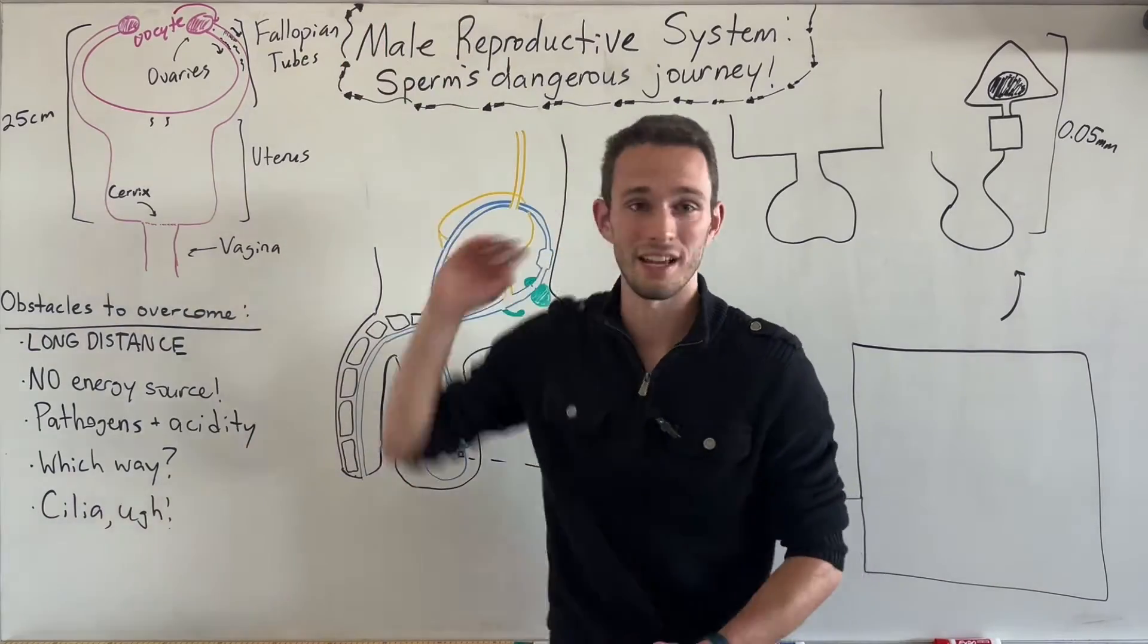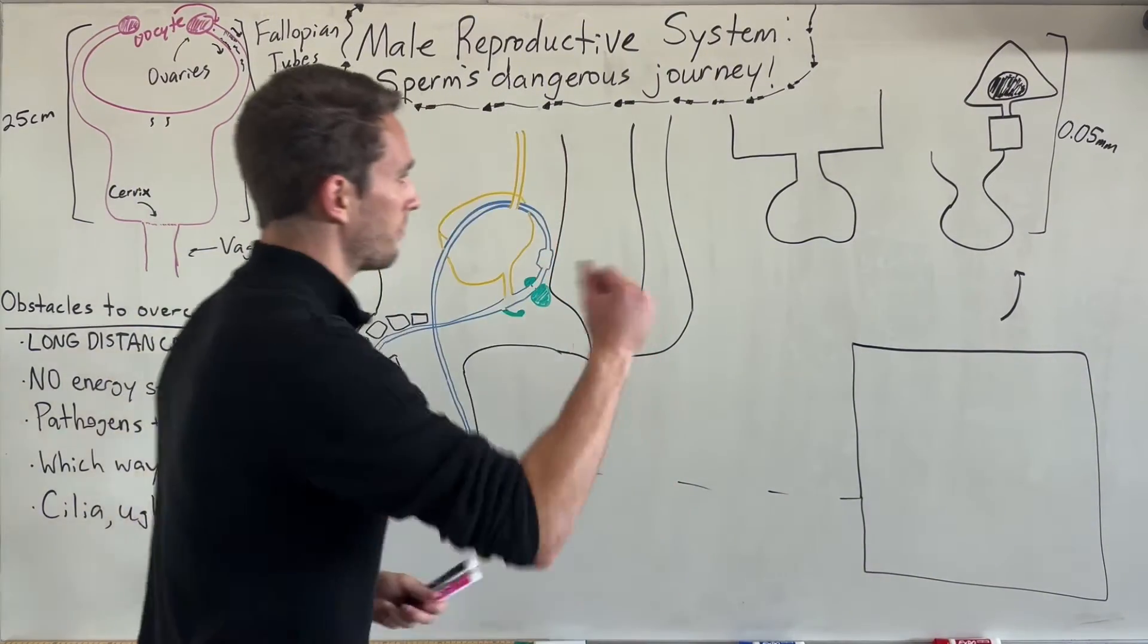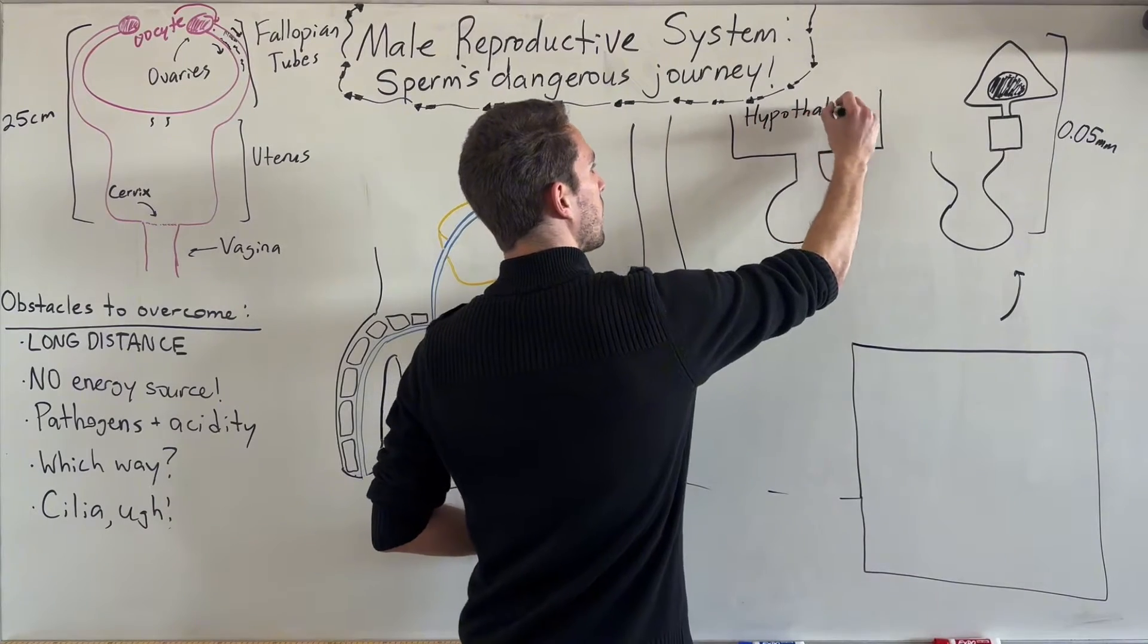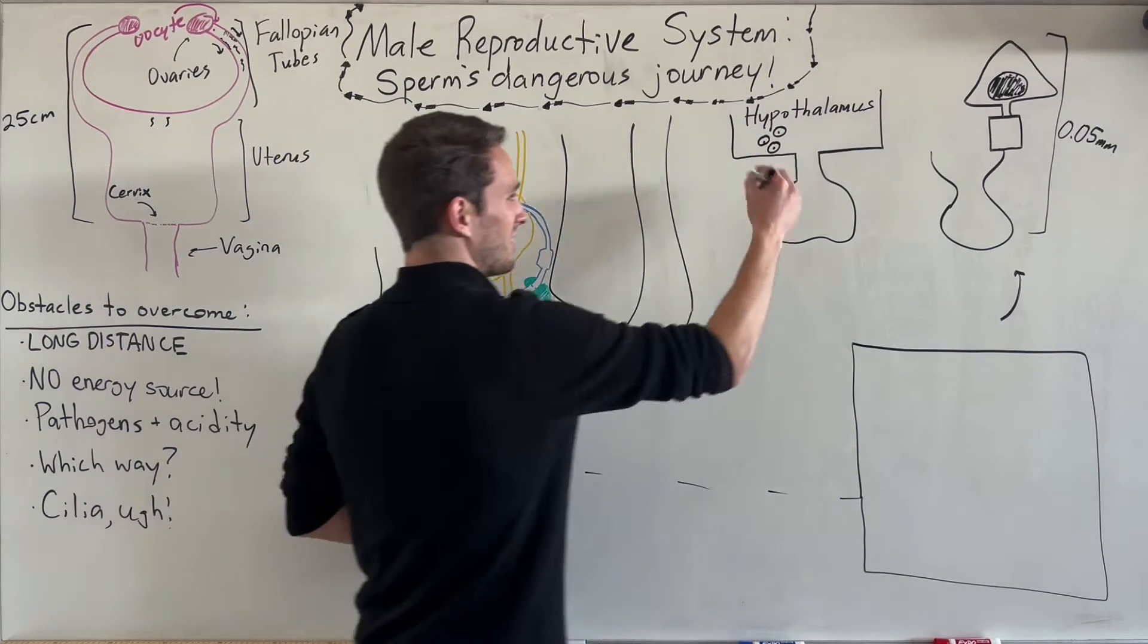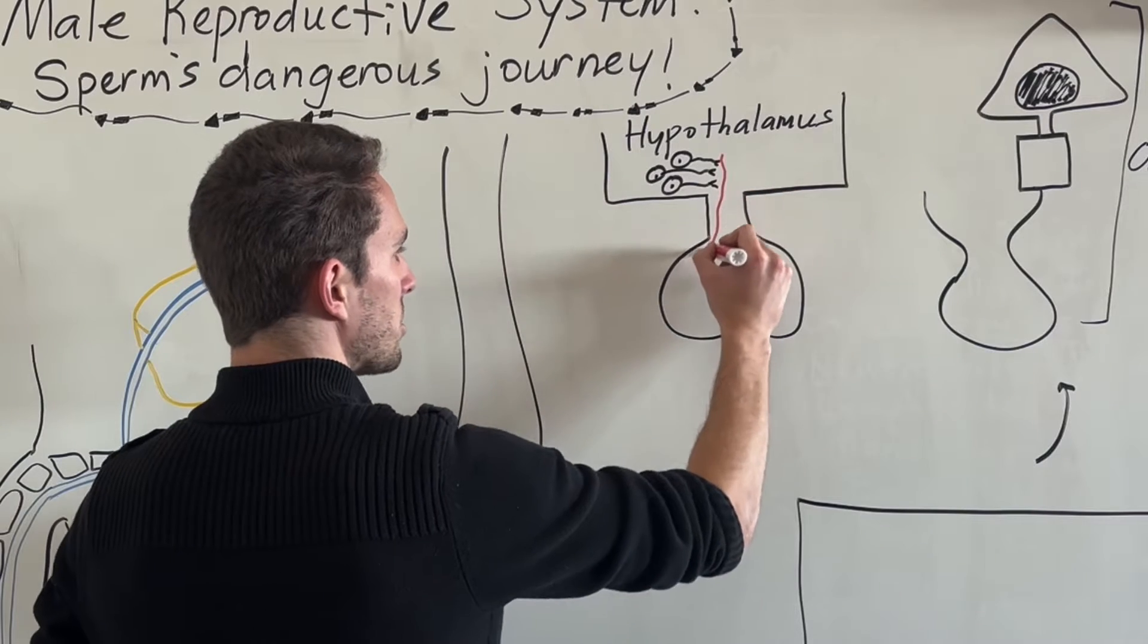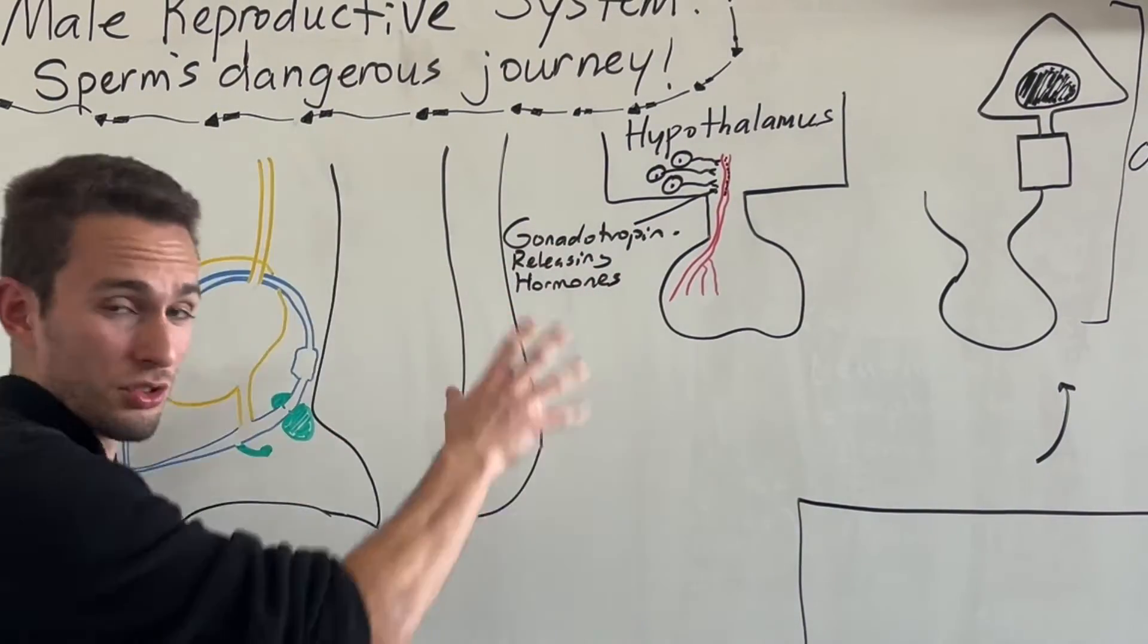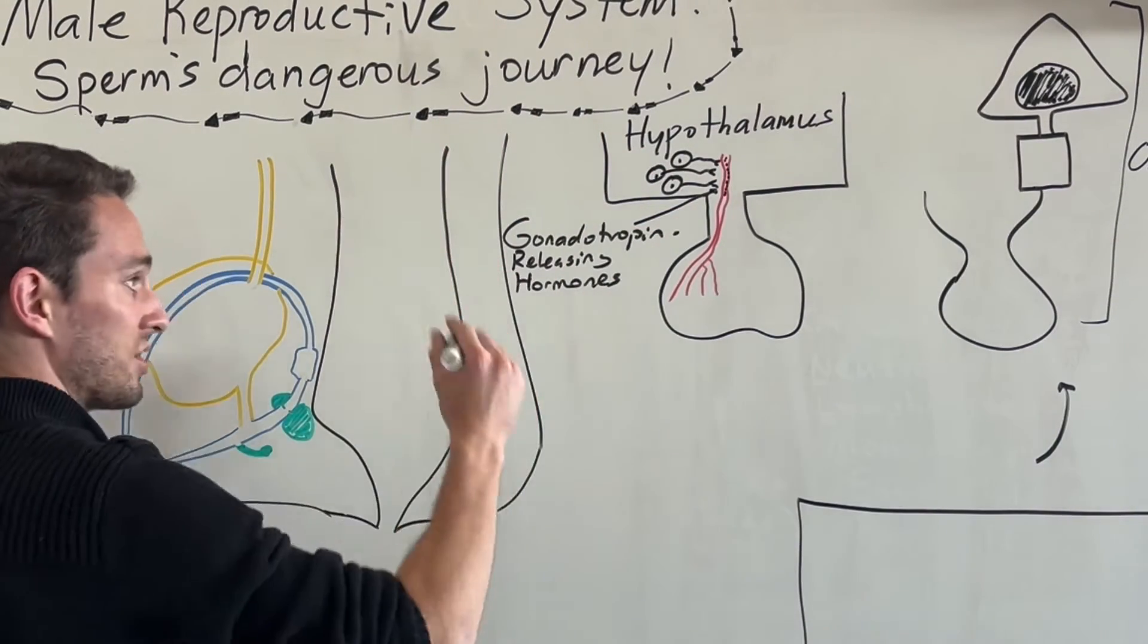Now that we know all the obstacles we're going to hit on our way to the oocyte, let's actually talk about how we produce the sperm and how the sperm overcomes those barriers. First off, this all starts at puberty. Your hypothalamus, which is one of the base parts of your brain, will have some neurons on the anterior side, and these neurons are signaling cells. They're going to signal and release what's called hormones into the bloodstream of the anterior pituitary gland. These hormones are called gonadotropin releasing hormones.